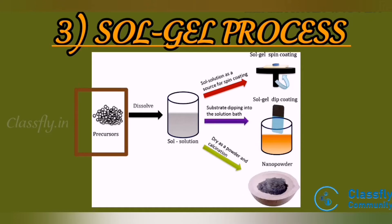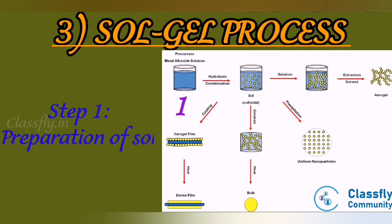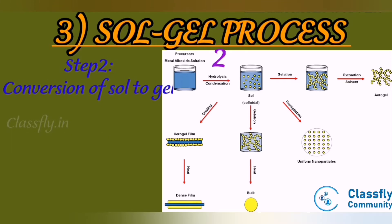Starting materials for nanomaterials are called precursors. The following steps are involved in the synthesis of nanomaterials by the sol-gel process. Step 1: Preparation of sol. A sol is prepared by dispersing metal salt or metal alkoxide, i.e. precursors, in a solvent. Step 2: Conversion of sol to gel. The sol is further converted into gel by hydrolysis and condensation of precursors.